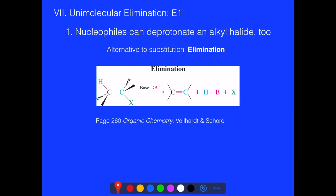We're going to move to talk about unimolecular elimination reactions, which we call E1. Much like SN1 reactions, the very first step is rate limiting, hence E1 and unimolecular. These reactions occur because the same nucleophiles that take part in SN1 reactions can deprotonate — that is, remove a hydrogen from an alkyl halide — and so they are an alternative to substitution known as elimination.